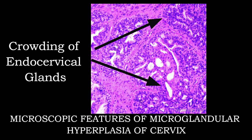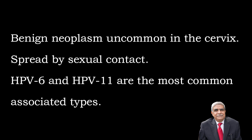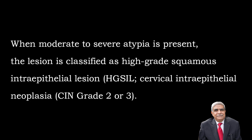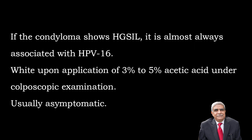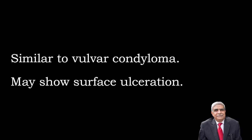Condyloma acuminatum is a benign neoplasm uncommonly seen in the cervix, spread by sexual contact. Human papillomavirus types 6 and 11 are the most common causative types. When moderate to severe atypia is present, the lesion is classified as high-grade squamous intraepithelial lesion or grade 2 CIN. If condylomas show high-grade squamous intraepithelial lesion, it is always associated with HPV type 16. White discoloration appears upon application of 3-5% acetic acid under colposcopic examination. Usually asymptomatic. Gross appearances are very similar to vulvar condylomas.